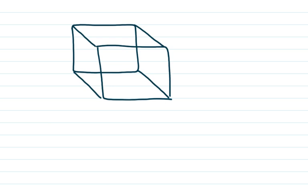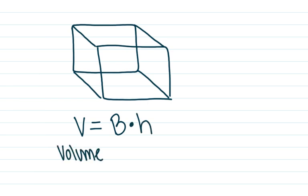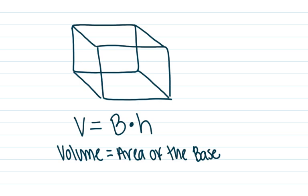Volume is the capacity this shape has to hold something. For a rectangular prism, our formula in sixth grade is: Volume equals capital B times H. V stands for volume. You may be wondering about the capital B — capital B stands for the area of the base. That's where it comes from. H is height.